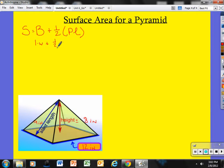Plus one-half. The perimeter itself is 12, 12, 12, and 12. So that would give me 12 times 4, that is 48, times the slant length, which is 9.